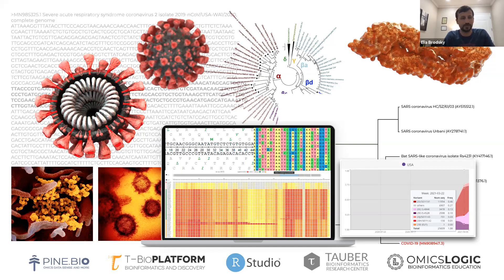Let's talk about some examples. B.1.526, B.1.5261, B.1.525, and P.2 variants circulating in the United States are classified as variants of interest. What that means is that we don't know whether they have a consequence on phenotype, but since they are occurring, we are going to be monitoring them — so they are of interest.